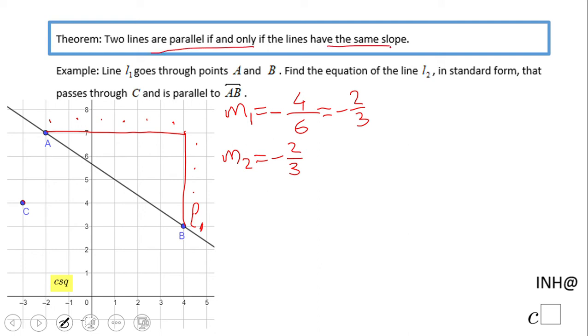And then we have a point given, which is point C, which has the coordinates (-3, 4). So how are we going to handle this? We have two choices. One would be y = mx + b, which is the slope-intercept form.